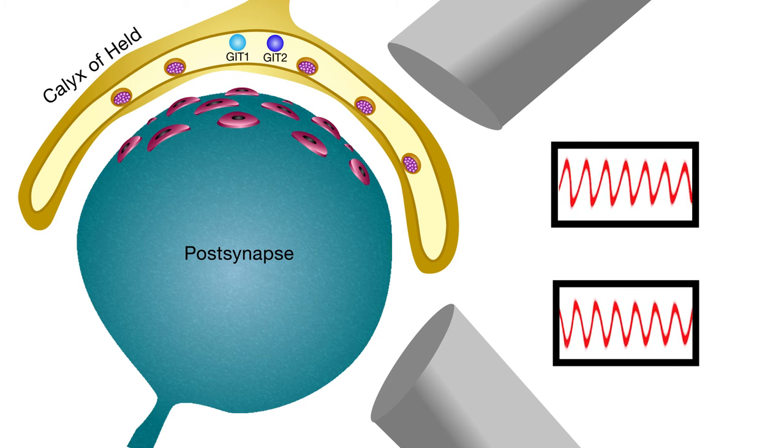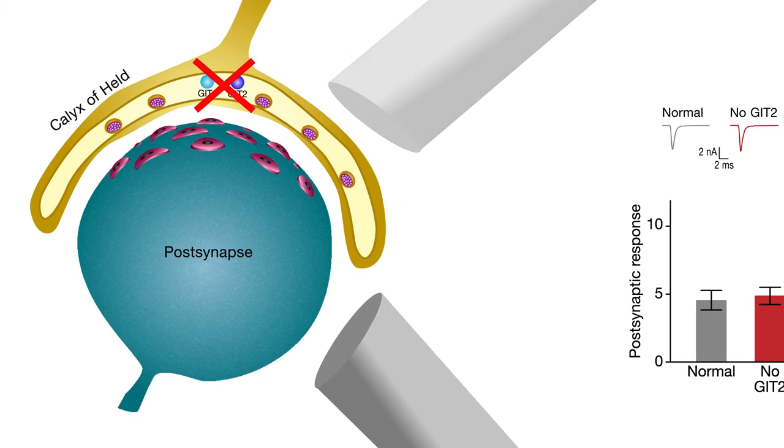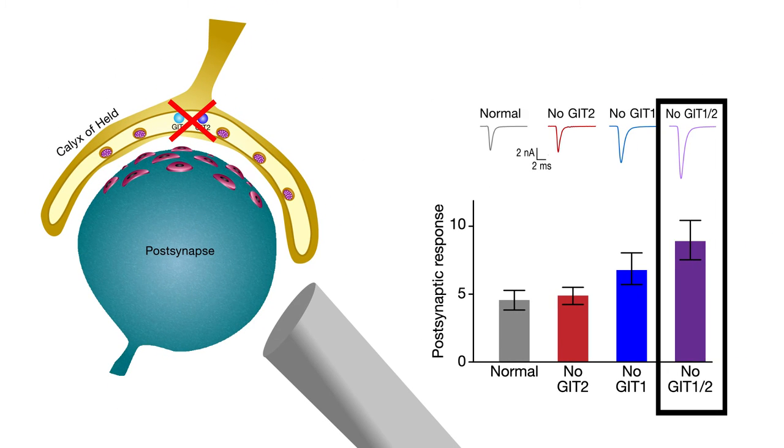When both GIT1 and GIT2 were eliminated from the calyx, post-synaptic responses were larger, demonstrating that pre-synaptic GITs regulate the strength of synaptic transmission.